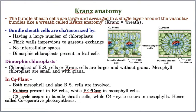The bundle sheath cells of Kranz anatomy are characterized by a large number of chloroplasts. They are thick-walled compared to normal bundle sheath cells, and they are impermeable to gases — meaning neither carbon dioxide nor oxygen can enter these cells. There are also no intercellular spaces.